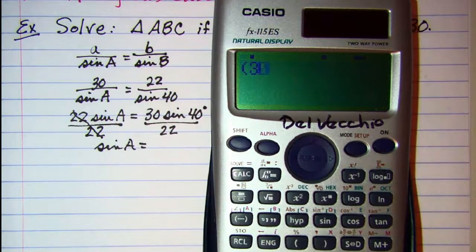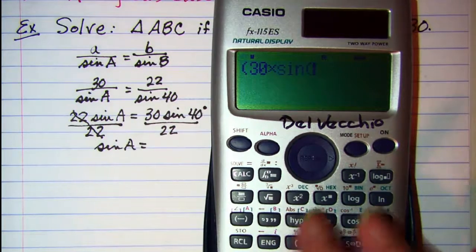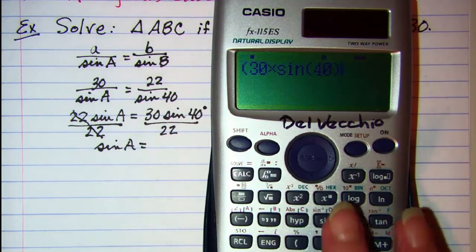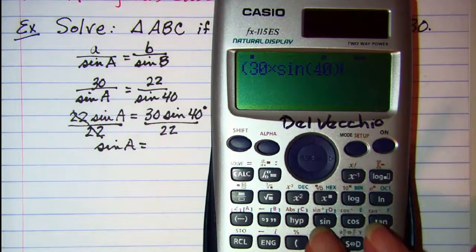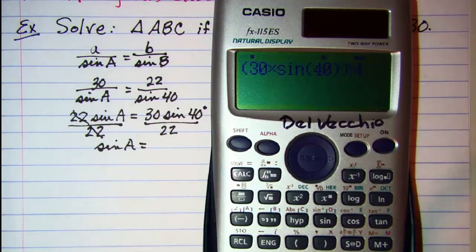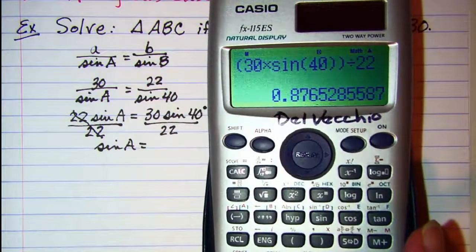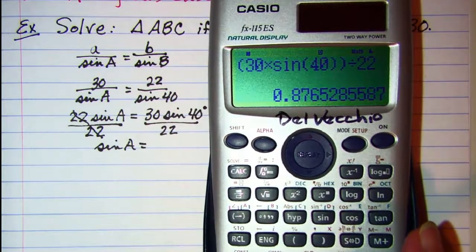30 times the sine of 40, close the argument on the sine function and close the numerator, divided by 22. We have the sine of A is about 0.8765.